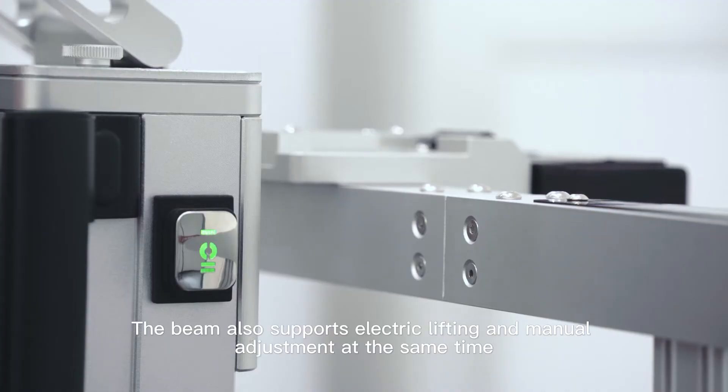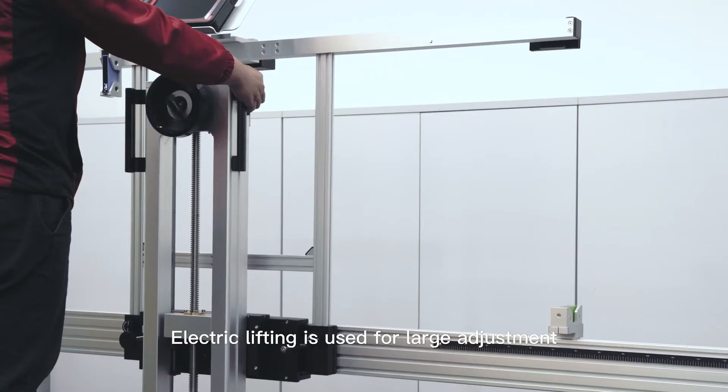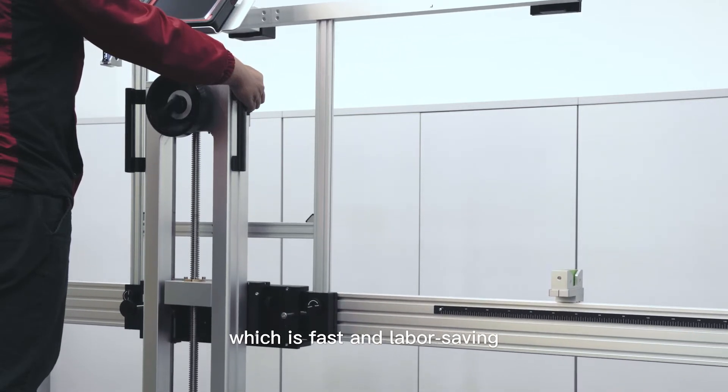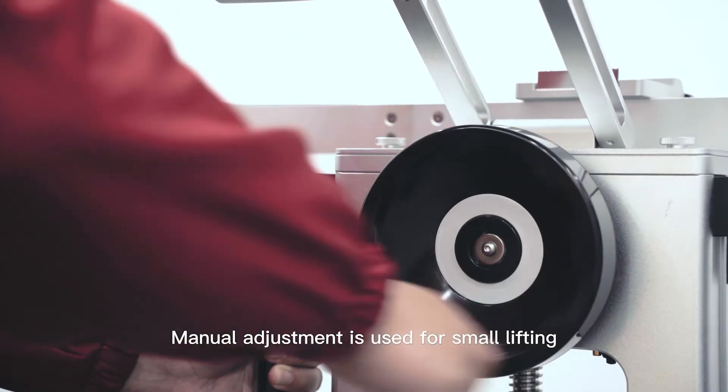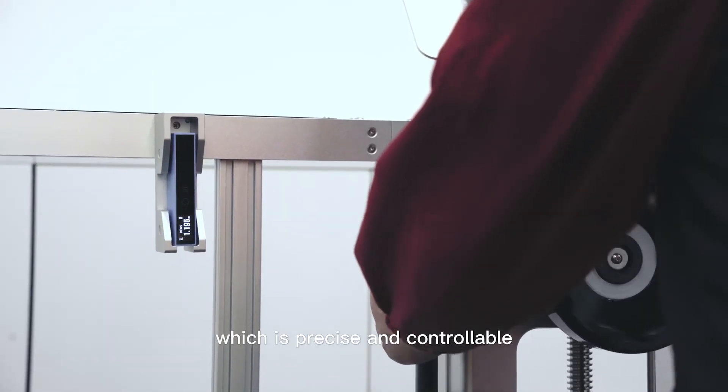The beam also supports electric lifting and manual adjustment at the same time. Electric lifting is used for large adjustment, which is fast and labor-saving. Manual adjustment is used for small lifting, which is precise and controllable.